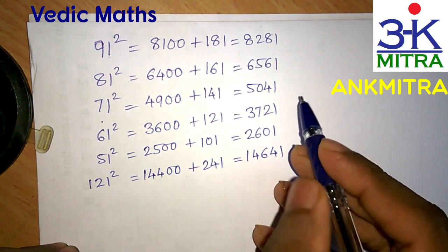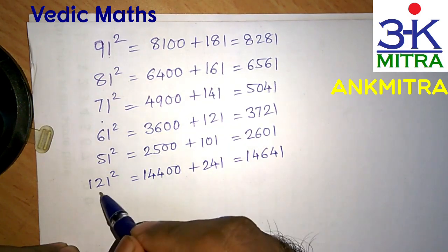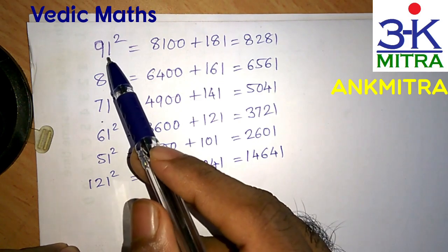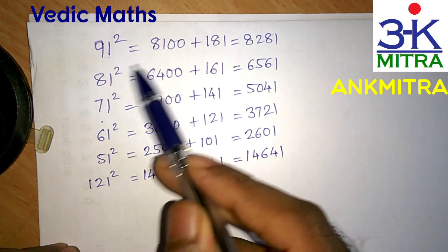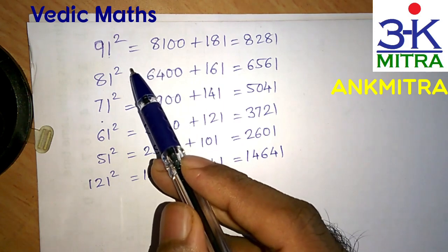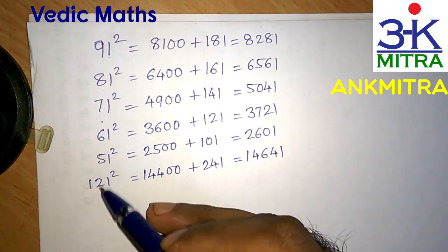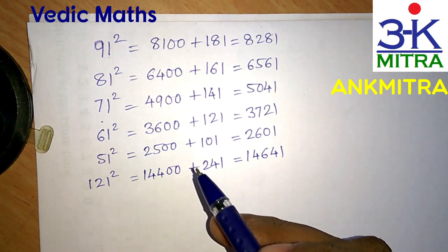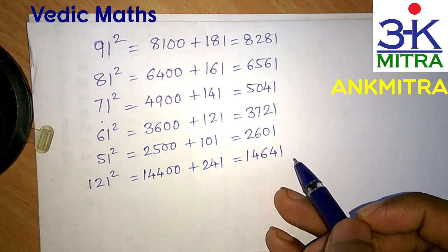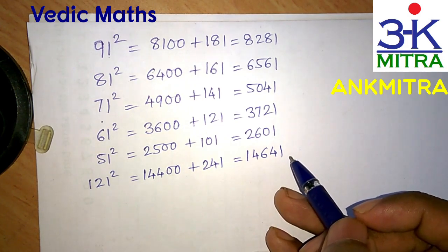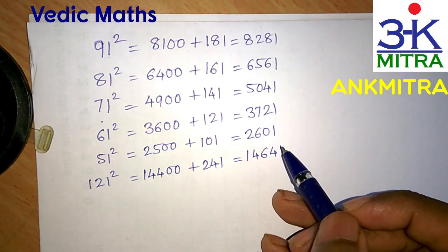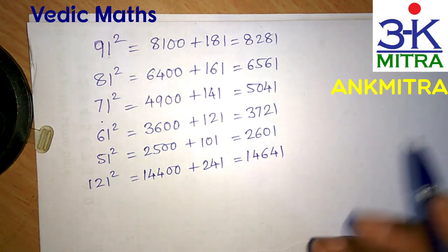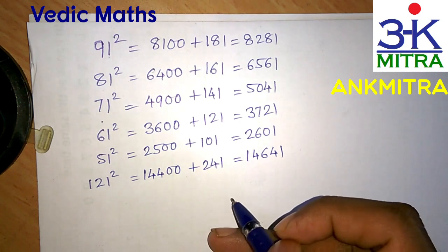I hope this trick is clear to everyone, and you'll make use of it whenever you need to find squares of any number that is one more than a perfect round number. If you like this, please let me know. If you have any feedback or comments, please mention them in the comments section. Please share this video with your friends who can also benefit from this trick. Thank you.